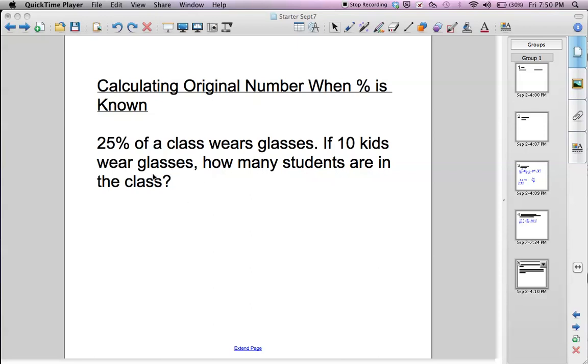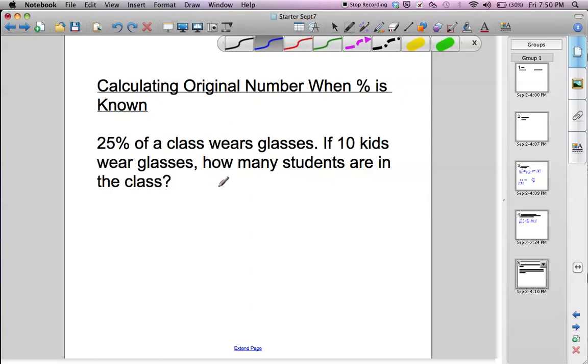Okay, so let's take a look at here. Let's start off with the percent equation that you might have seen. So when you get a percent of a number, you take the percent times the number. It equals another number. So in this case, the percent is 25%.